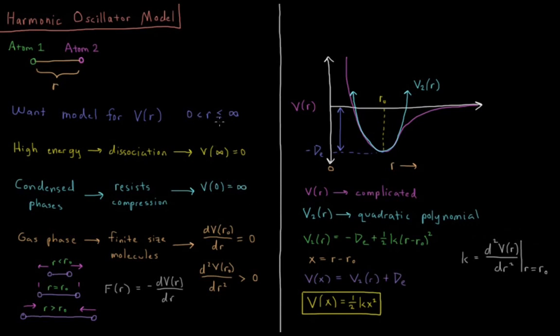All right, so those are the two limits. What about everything that happens in the middle? So in gas phase, we know that the molecules have finite size, and they're pretty happy to remain as molecules.